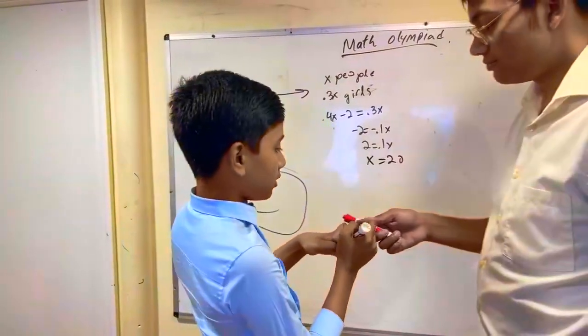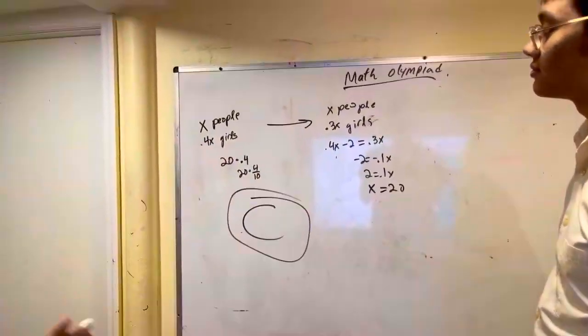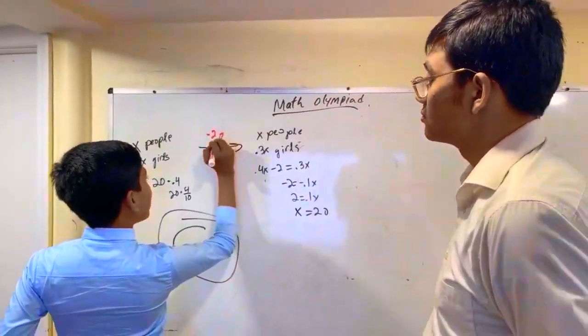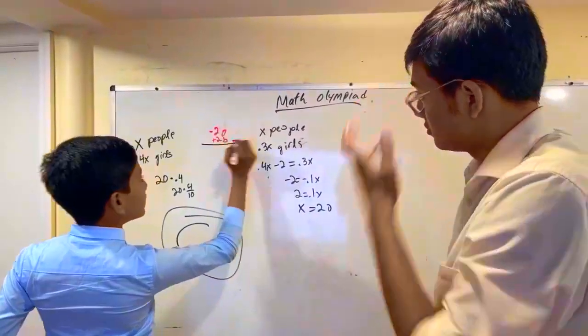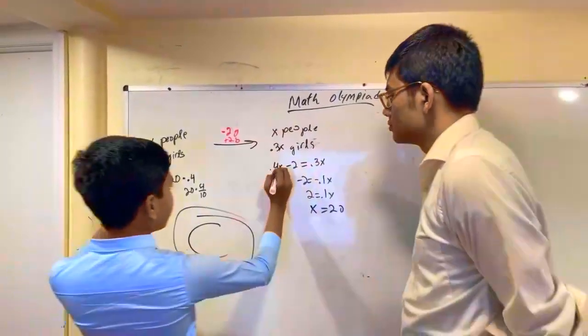Go ahead, enlighten me. There are x people and 40% of them are girls, so point four x. After two girls leave, but two boys join, so that means there are still x people but only 30% of them are girls.